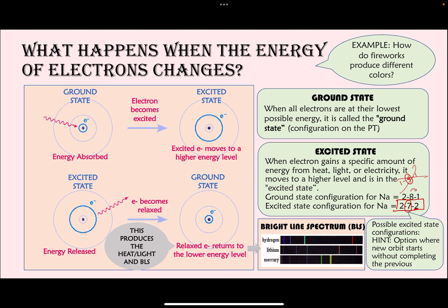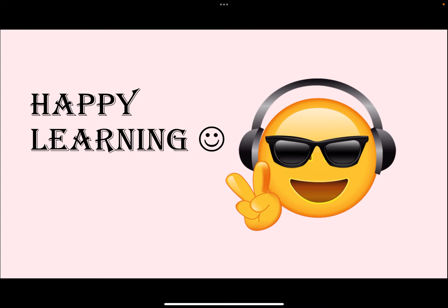A key question you may get: how is a bright line spectrum produced? Your answer must include: when an electron moves from the excited state to the ground state, energy is released as heat or light, producing the bright line spectrum. You may also be given spectra for elements like hydrogen, lithium, and mercury, plus a mixture spectrum, and asked which elements are in the mixture — just match all the lines. That wraps up this unit.